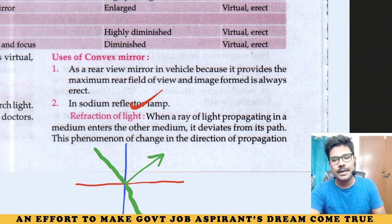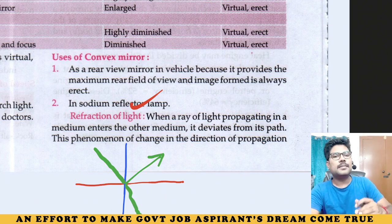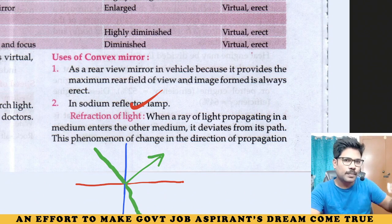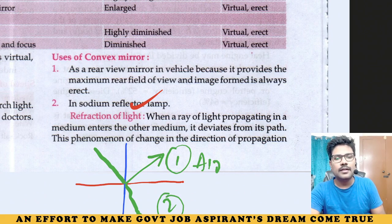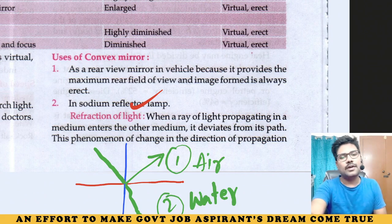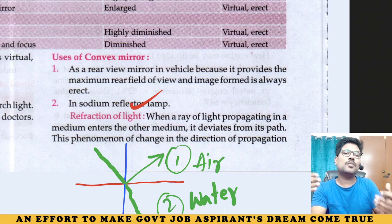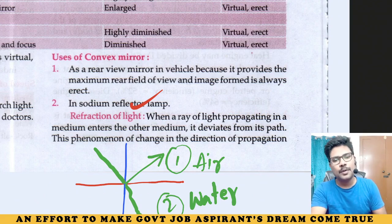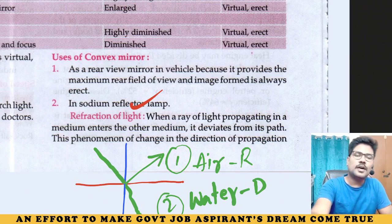One medium is where refraction takes place. For convenience, air has less density compared with water. Water has got more density than air. Air is the rarer medium, water is the denser medium.